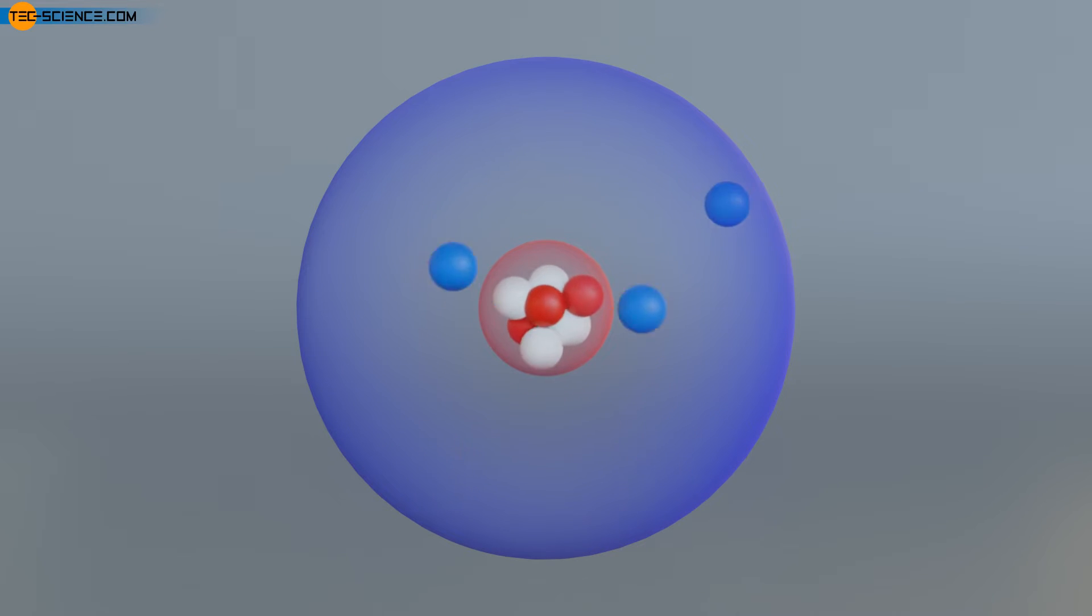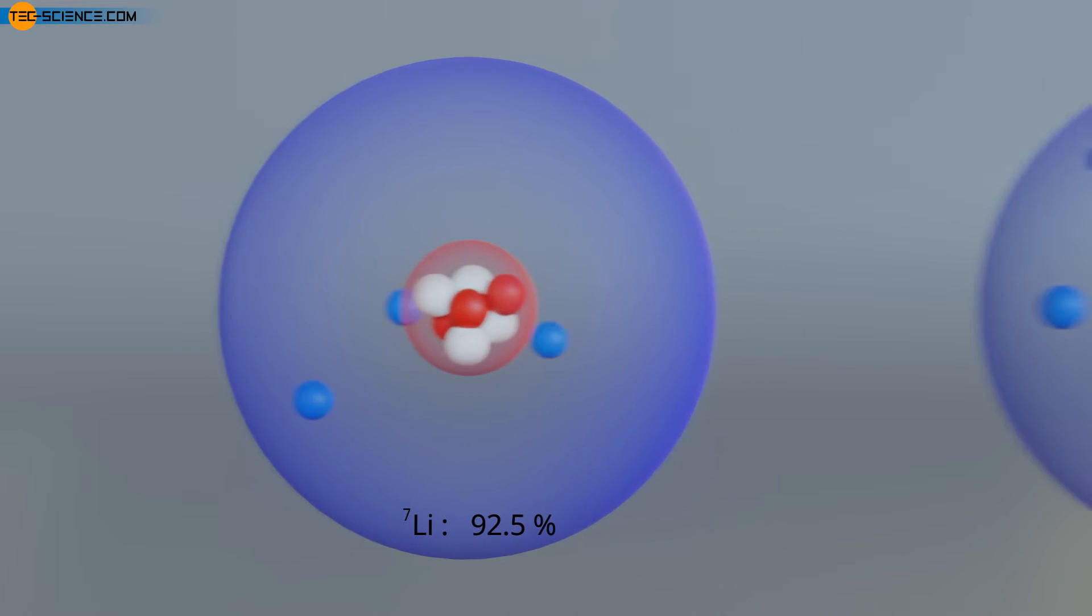However, the number of neutrons is not characteristic for a chemical element. For example, a lithium atom usually has four neutrons in its nucleus. However, this only applies to 92.5% of all lithium atoms. The remaining 7.5% of lithium atoms found in nature contain only three neutrons in the nucleus.